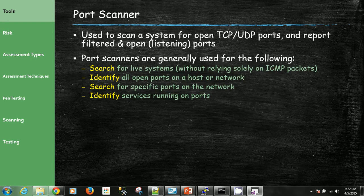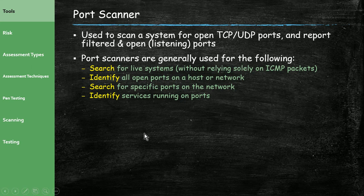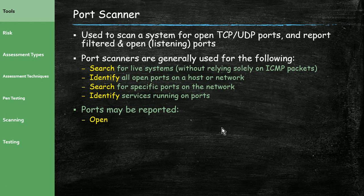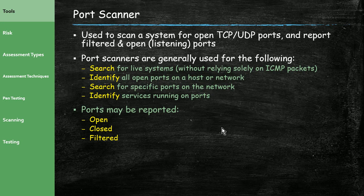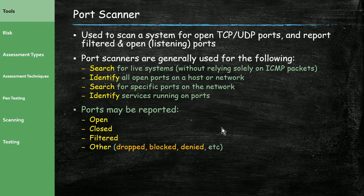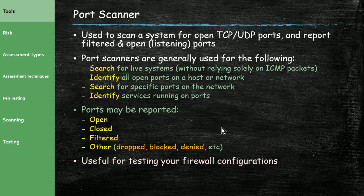Ports will be reported as open (you can connect), closed (you can't connect), filtered (a system is there but filtering that port), or other (dropped, blocked, denied). This is very useful for testing your firewall. We talked about baselining in the mitigation unit — port scanning is one method you can use to audit your firewall, checking what traffic is blocked or denied and verifying your firewall logs match your design.